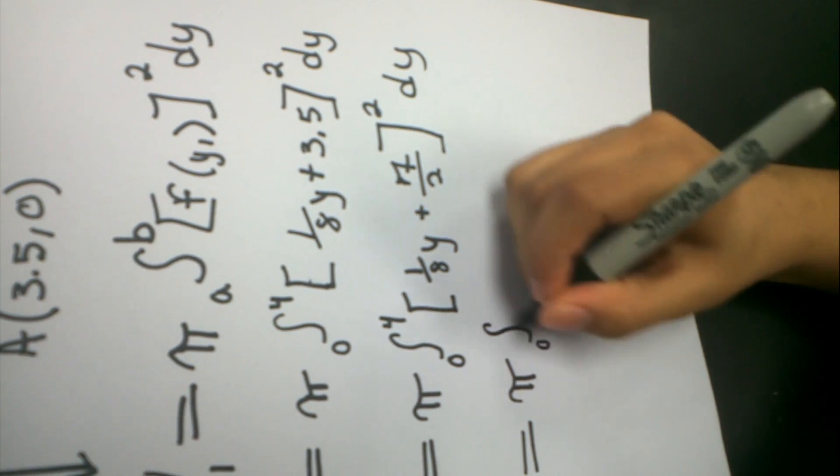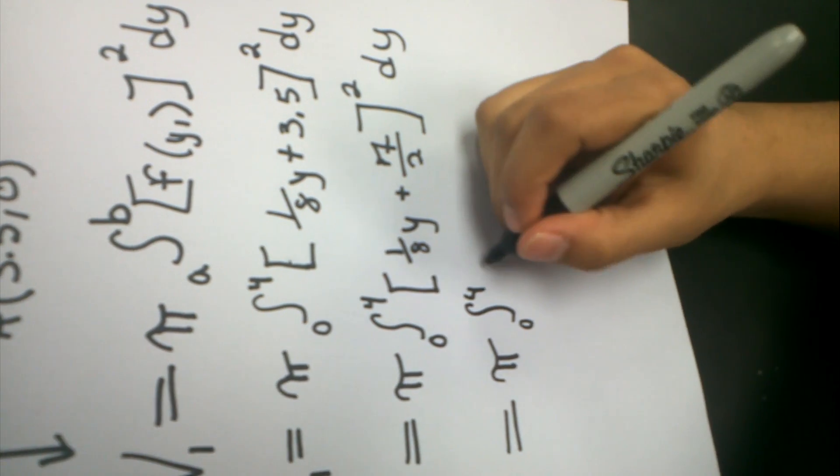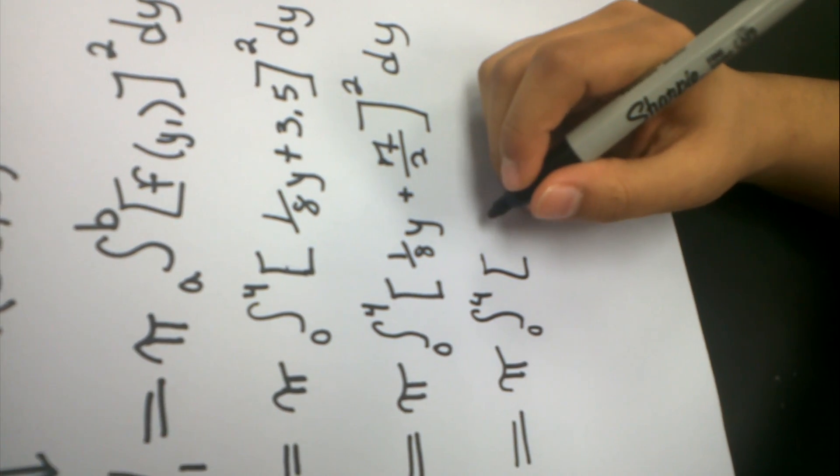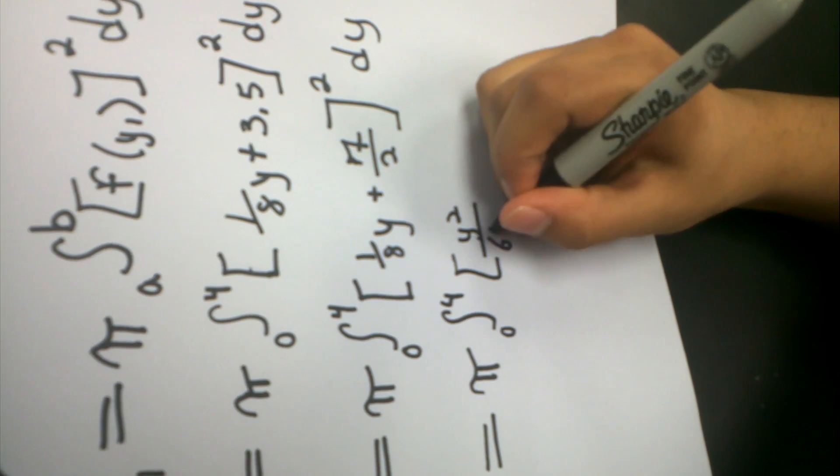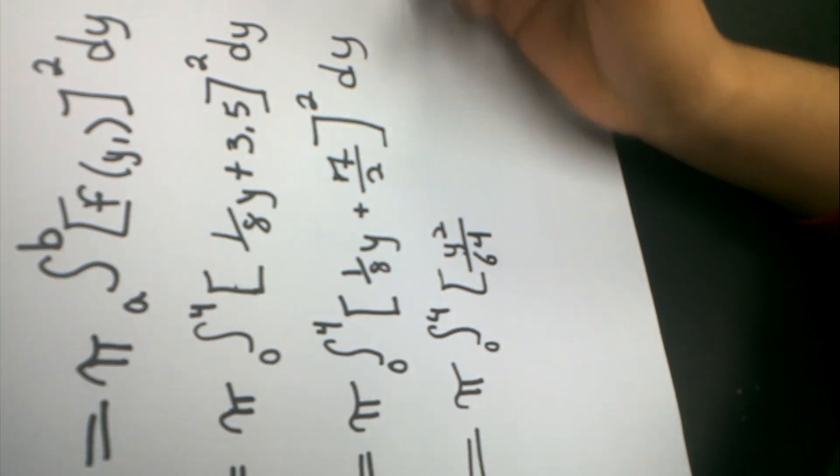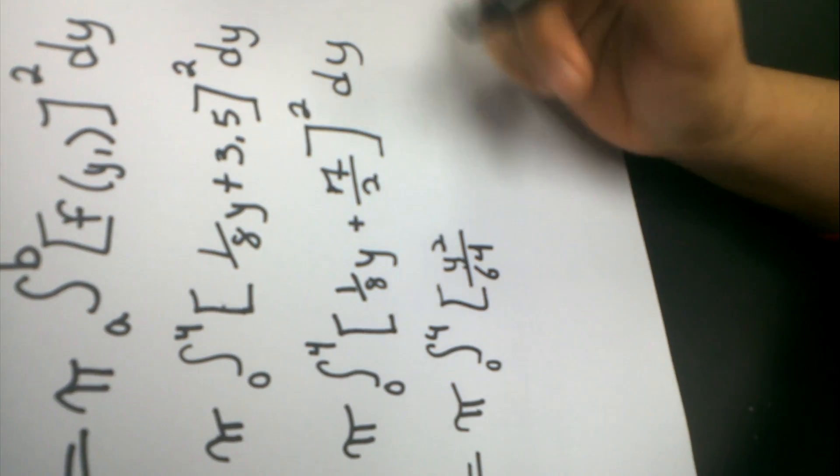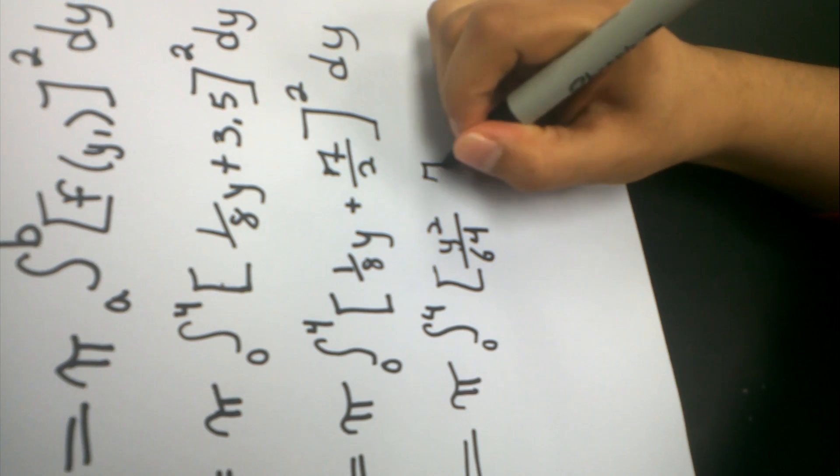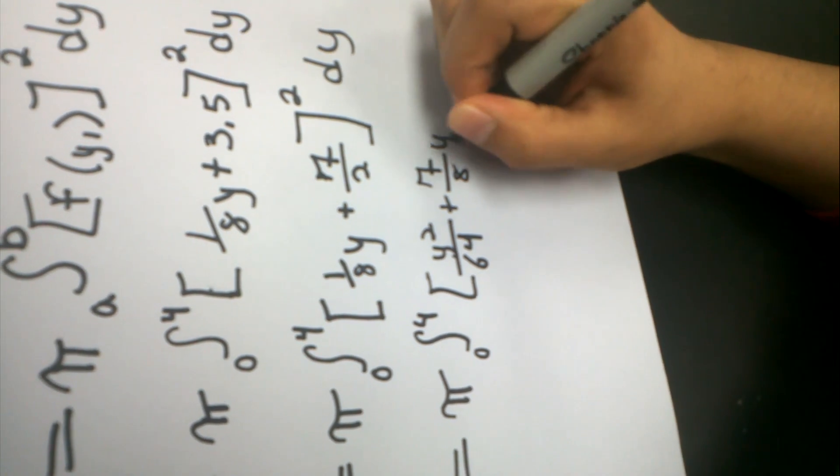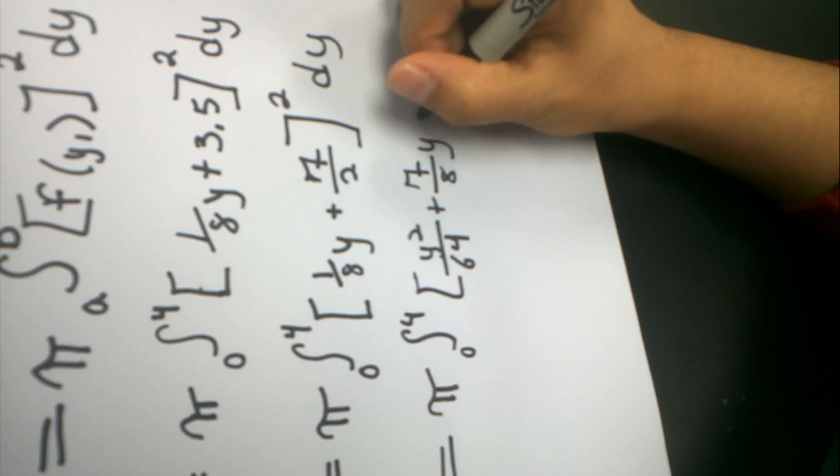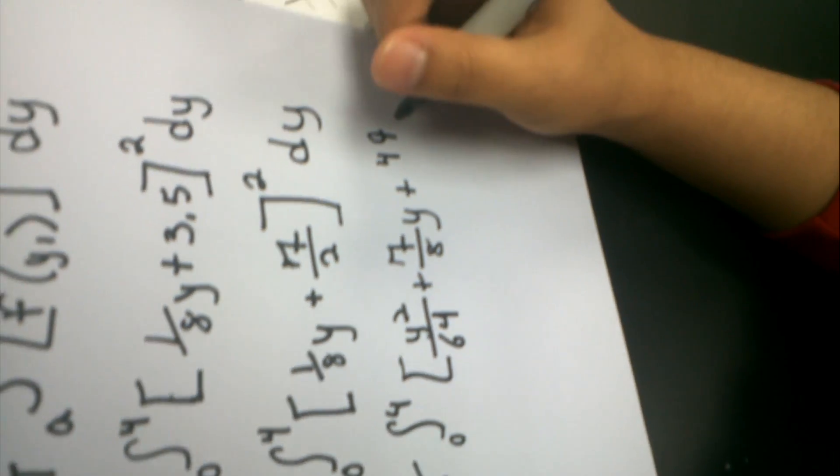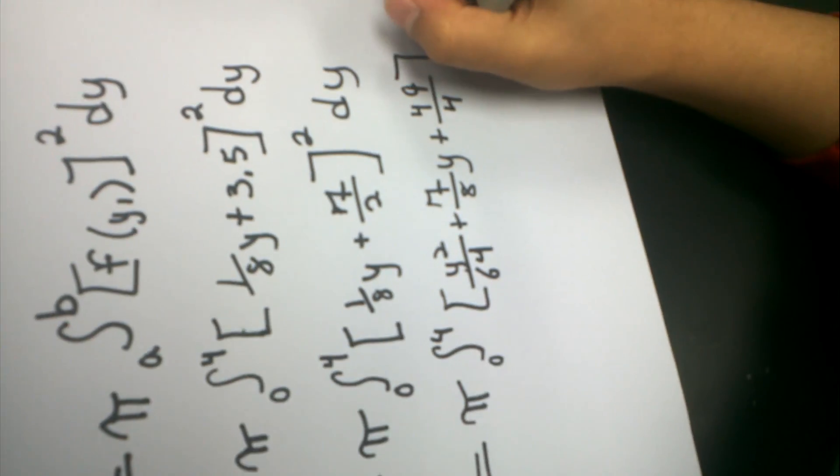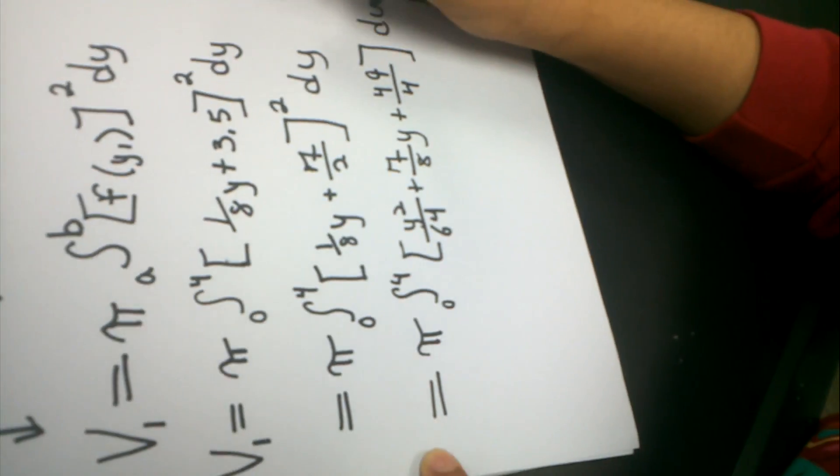π, 0 to 4. If you square ⅛y, you have y²/64. If you do 2ab, which is always 2 times the first and the second, you get plus 7/8y. And you square the last one, which is plus 49/4. I already plugged in the square, so I don't need that anymore. So that's dy. Let's bring that down one more time.